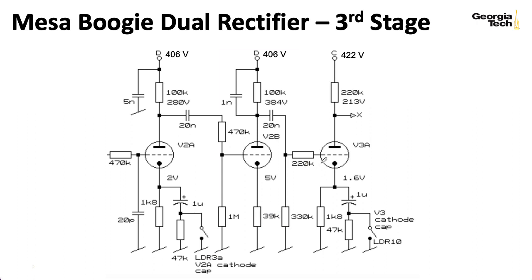Before we go on, I'll notice that this 220k resistance between our 330k grid leak resistor for the following stage and the grid of the following stage. This is something we haven't really seen. This is called a grid stopper resistor, and we'll talk about that another time. It doesn't really affect the analysis we're going to do now.